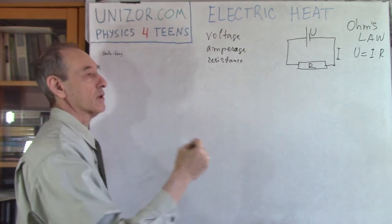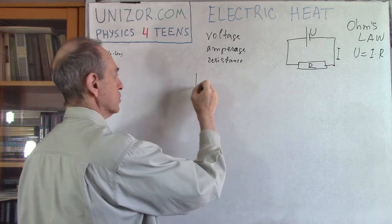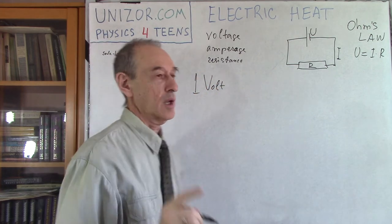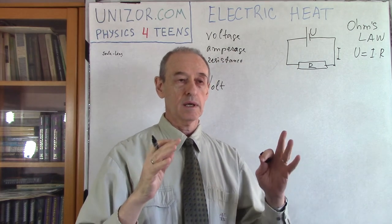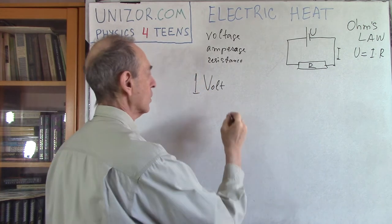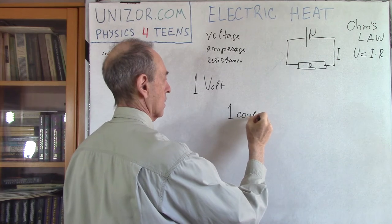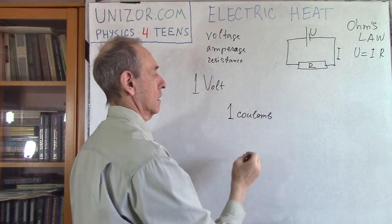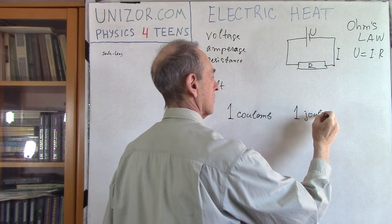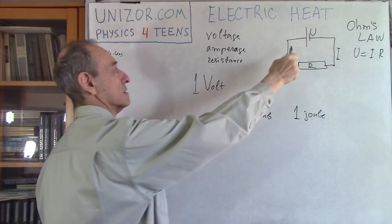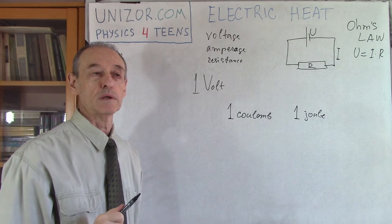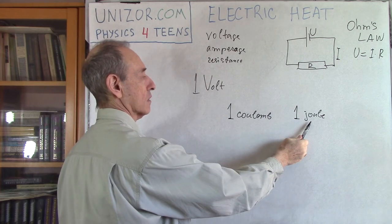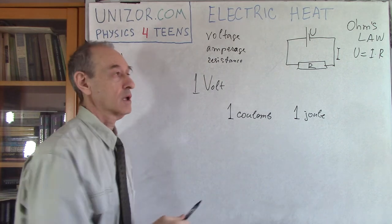What is a difference in electric potential of one volt? By definition, if to transfer one coulomb from one terminal to another requires one joule of work, then we say the difference in electrical potential is equal to one volt. So a voltage of one volt means it requires one joule of work to move one coulomb of electricity from one terminal to another.